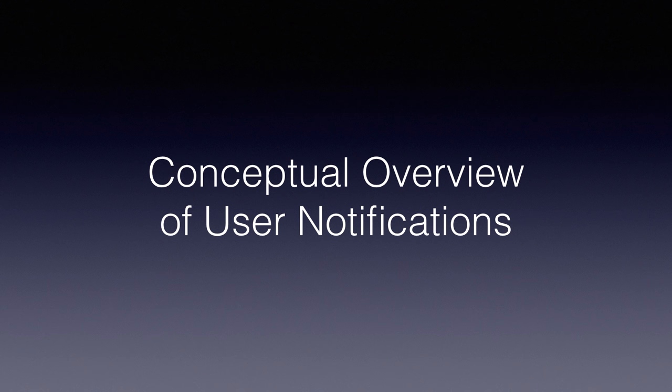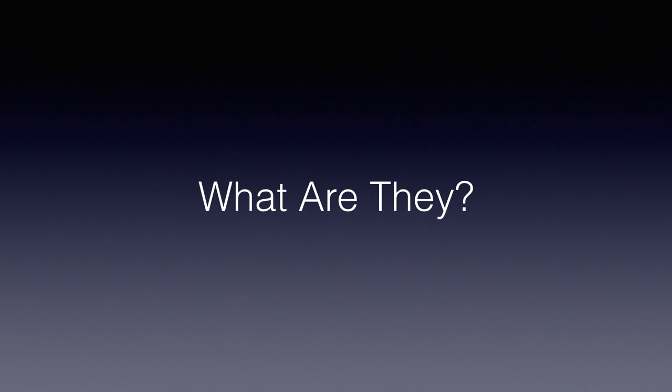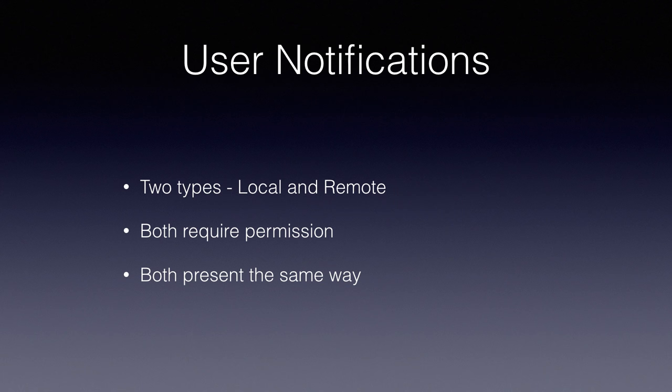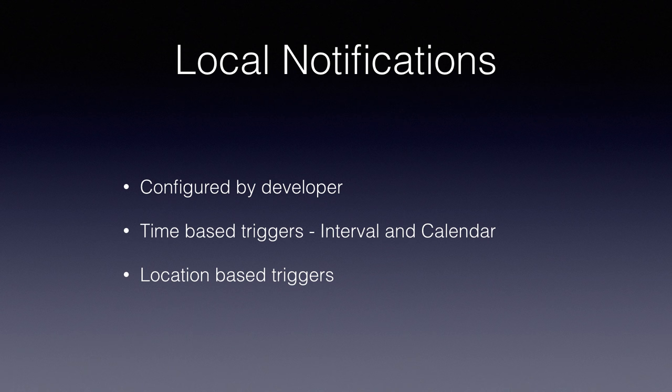First, let's talk about notification concepts. What are user notifications? There are two types of notifications: local notifications and remote notifications. These both require permission from the user and they both present in the same way. Generally to a user, it's visually indistinguishable whether the notification is a remote one or a local one.